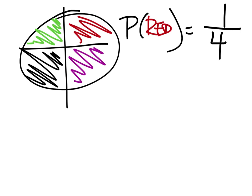It's based on what you expect to happen. So if we were to spin this thing, we would expect it to land on red one-fourth of the time, or 25% of the time. In other words, there's a 25% chance of it landing on red.